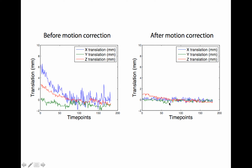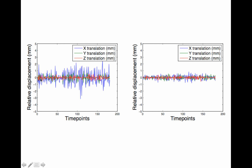After motion correction, it did a good job — there's not much left in the data. Here's relative displacement in millimeters — this is the first derivative, and it's often way more informative in terms of things that are going to disturb your data, specifically if you moved a lot from one TR to the next. The max for this data set is around two and a half to three millimeters, and that has diminished a lot after registration. Any big jumps — the FD confounds we computed earlier will take care of those.